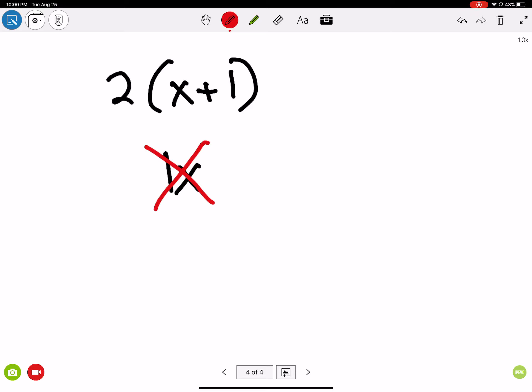You cannot add a variable to a non-variable. I cannot add a number to a variable. I can multiply a number and a variable, but I cannot add them. So this actually stays the same. But there's still this 2 times. So I'm going to distribute the 2 to the x and the 2 to the 1.